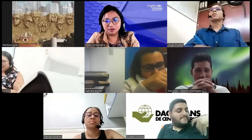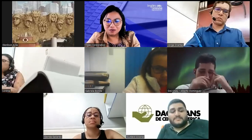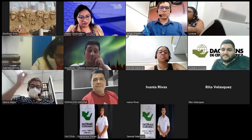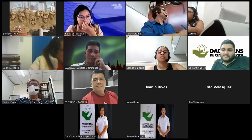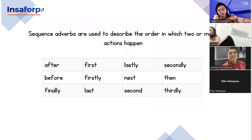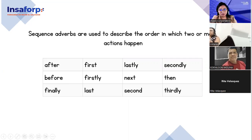Pero antes les muestro los sequence adverbs. You know, sequence adverbs are very useful. Muy útiles para recetas, para secuencias de cualquier tipo. Por ejemplo, tenemos estos cinco: first, then, next, after that, and finally. And they are going to be used to describe the order in which two or more steps or actions happen. Sirven para describir pasos, secuencias.